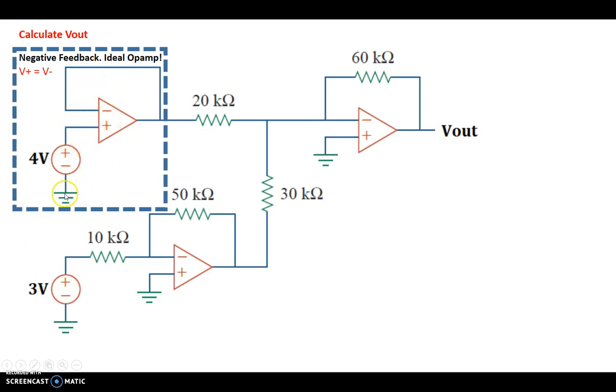So in this circuit right here, the voltage, so here's the ground, is a 4-volt source. So the voltage at that end is equal to 4 volts. Because of this ideal op-amp rule, the voltage at this node right here is also 4 volts.